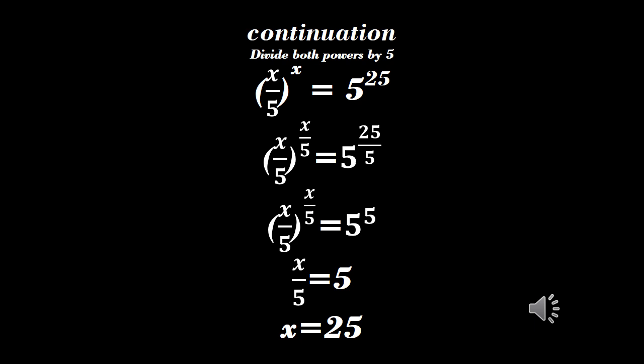So we have x over 5, all raised to power x, equals 5 raised to power 25. Now if we divide both powers by 5, we have x over 5 raised to power x over 5 equals 5 raised to power 25 over 5, which gives us x over 5 raised to power x over 5 equals 5 raised to power 5.